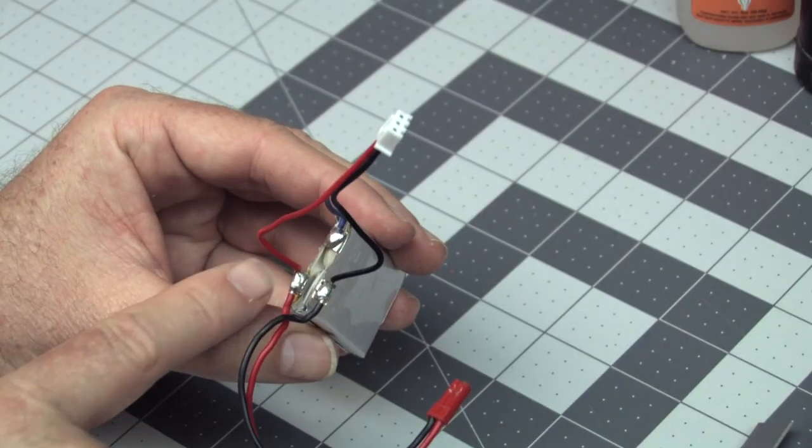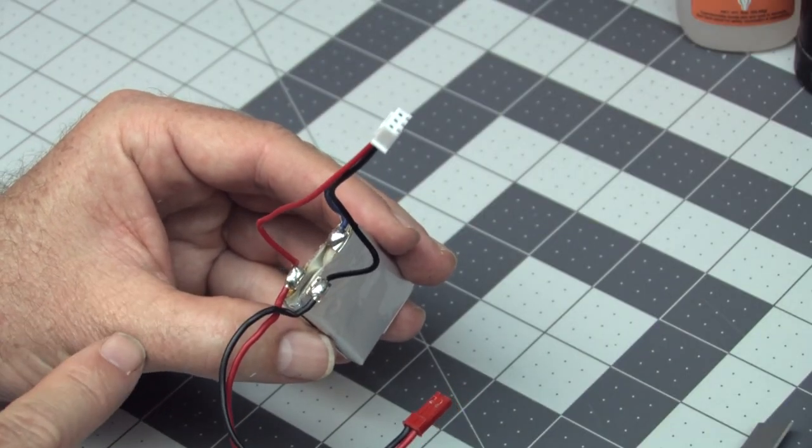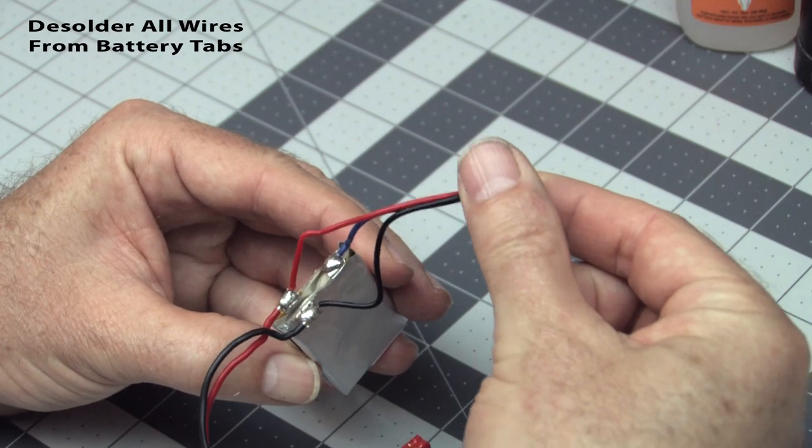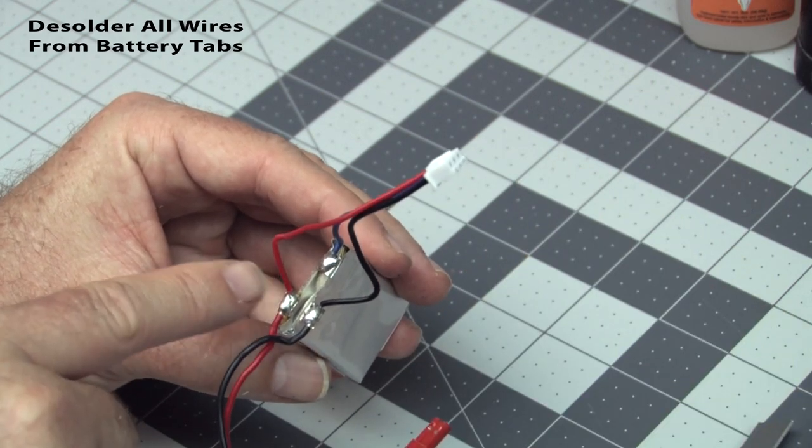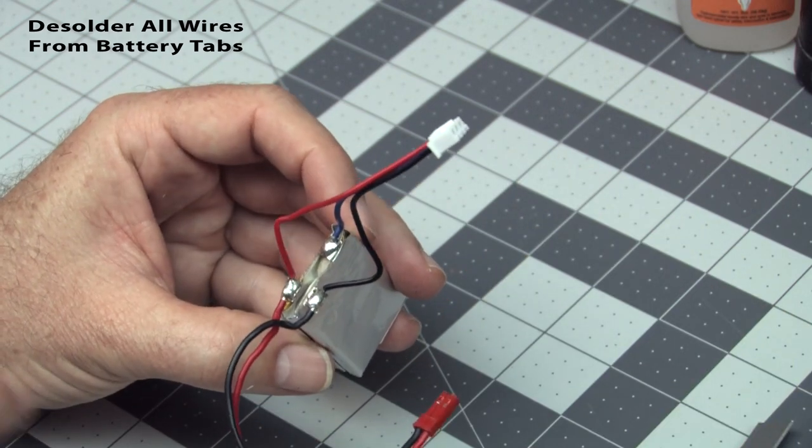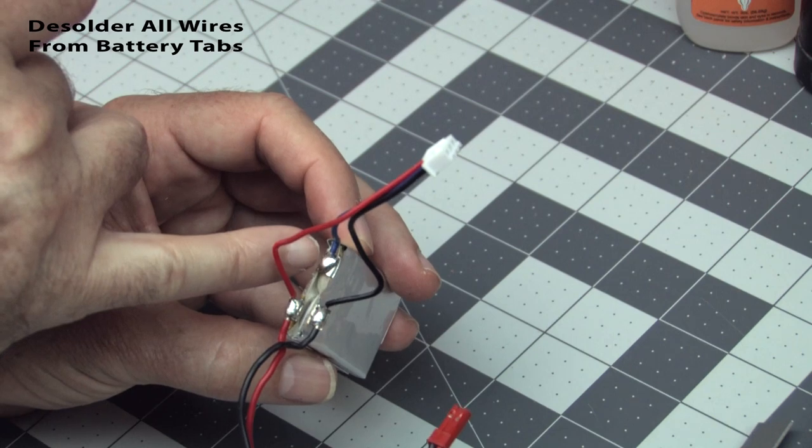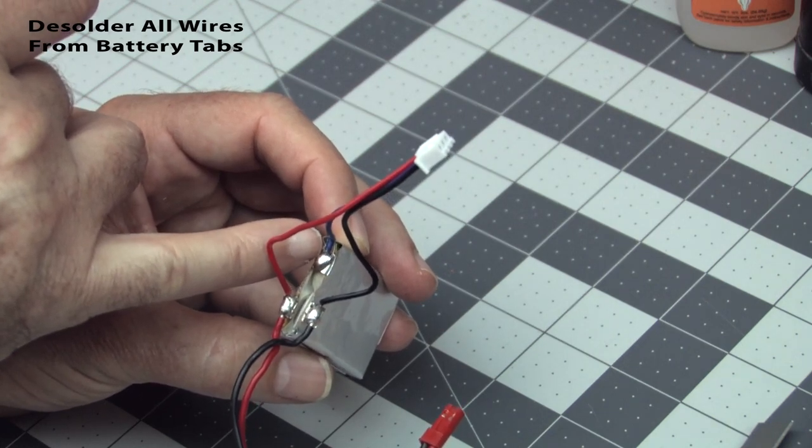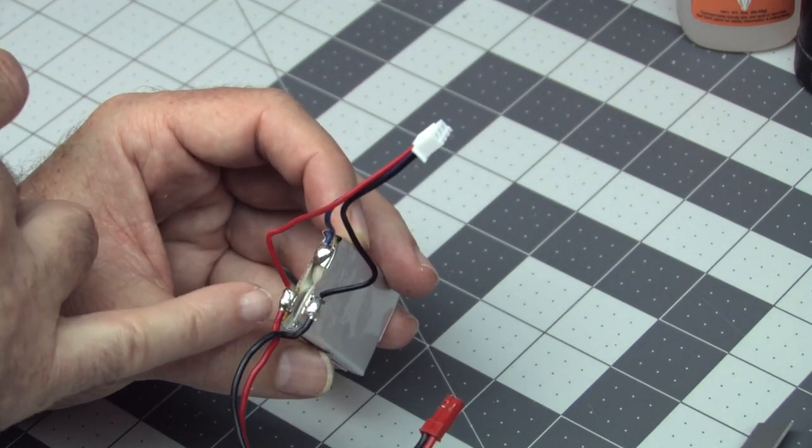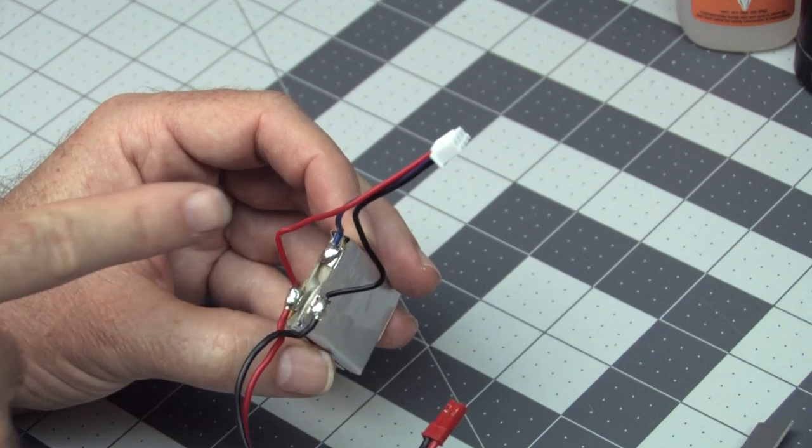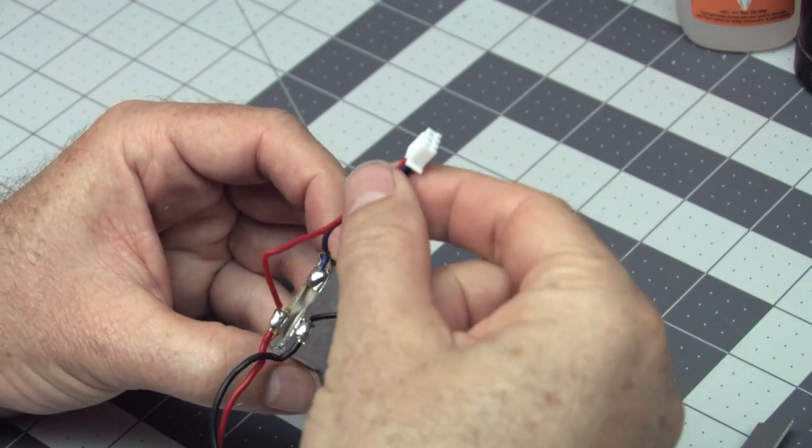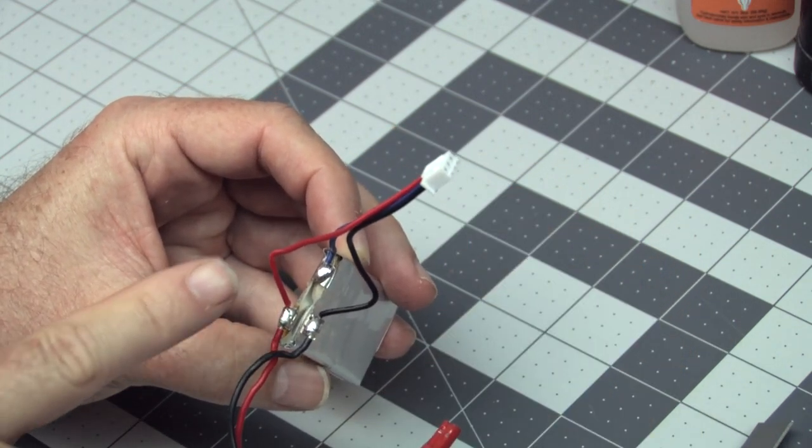Now let's work on this bigger 460 pack. It's just a lot easier to see everything. You can see the balance port here. It has positive, negative, and then it has the third balance port, which is the junction between the plus and the minus of the cell packs. So we want to desolder the plus and the minus here. And we want to desolder the balance port off of here. Because with a 1S we don't need a balance port anyway.